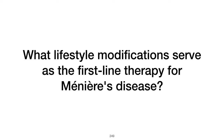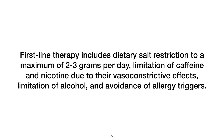What lifestyle modifications are considered first-line therapy for Meniere's disease? For Meniere's disease, lifestyle modifications include dietary salt restriction (maximum 2 to 3 grams per day), limitation of caffeine and nicotine, limitation of alcohol, and avoidance of allergy triggers. These measures may help reduce endolymphatic fluid and improve symptoms.